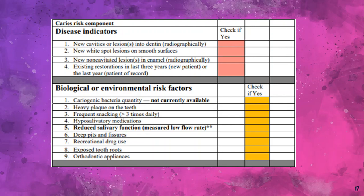Biologic or environmental risk factors include cariogenic bacteria measured quantitatively, heavy plaque on the tooth, frequent snacking greater than 3 times daily, hyposalivatory medications, reduced salivary flow, deep pits and fissures, and recreational drug use and exposures. If all these are present, this determines the moderate risk factors.